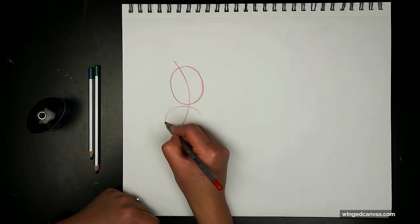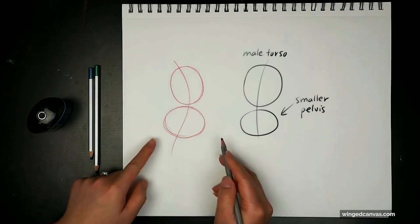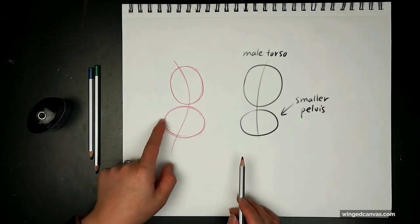You can make these two ovals about the same size, but remember on a female body the hips are going to be slightly larger.